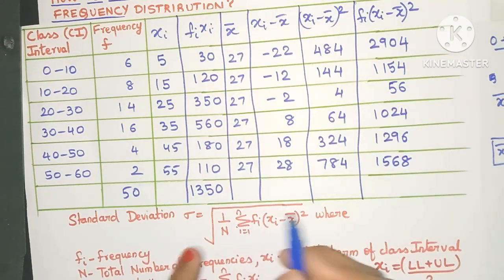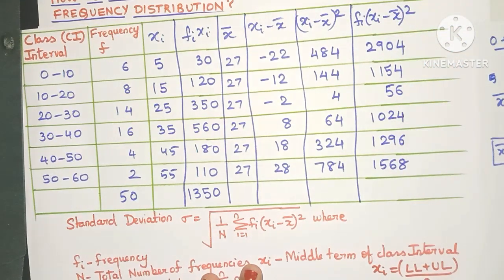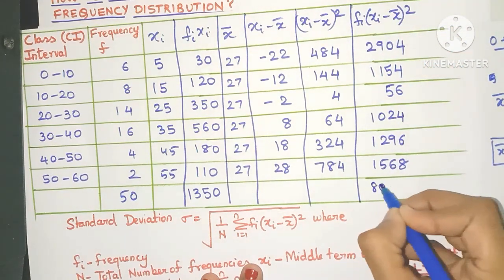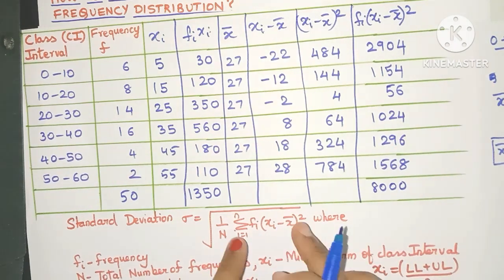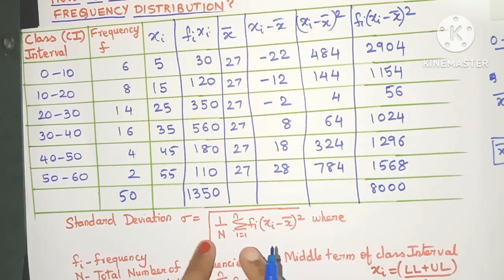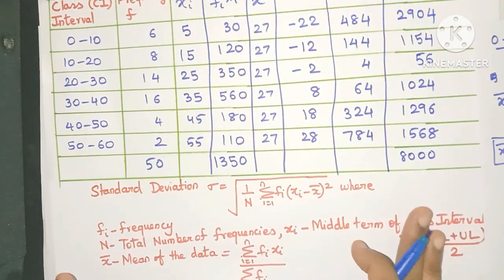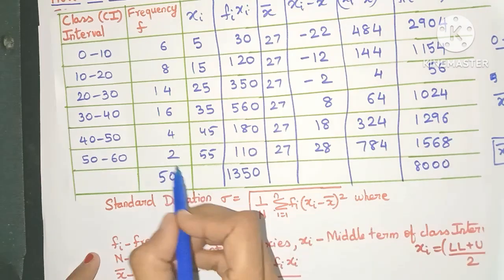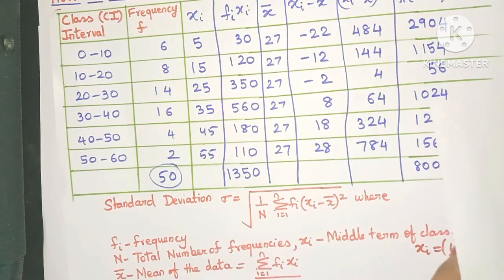Now what do we need to do? Again, look at the formula. We need to do the sigma, that is the summation. So add up all these values very carefully. You will get 8000 as the answer. Now what do we need to do? We have already got this sigma value. Now what is this n? Yes, n is nothing but the total number of frequencies, but we have already calculated that over here. See, 50. So it's time to do substitution.